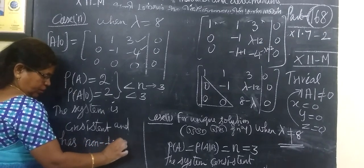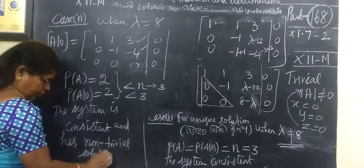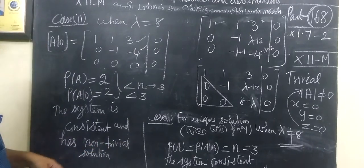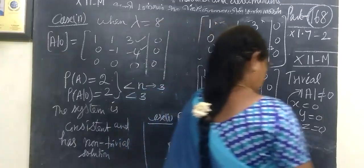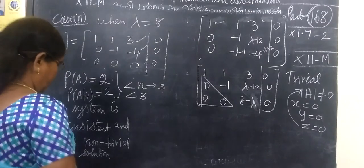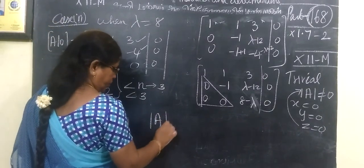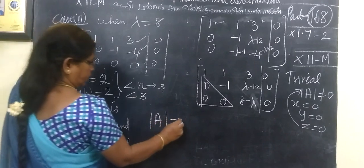Because why is it non-trivial solution? Determinant A is equal to 0. Therefore it is non-trivial solution.